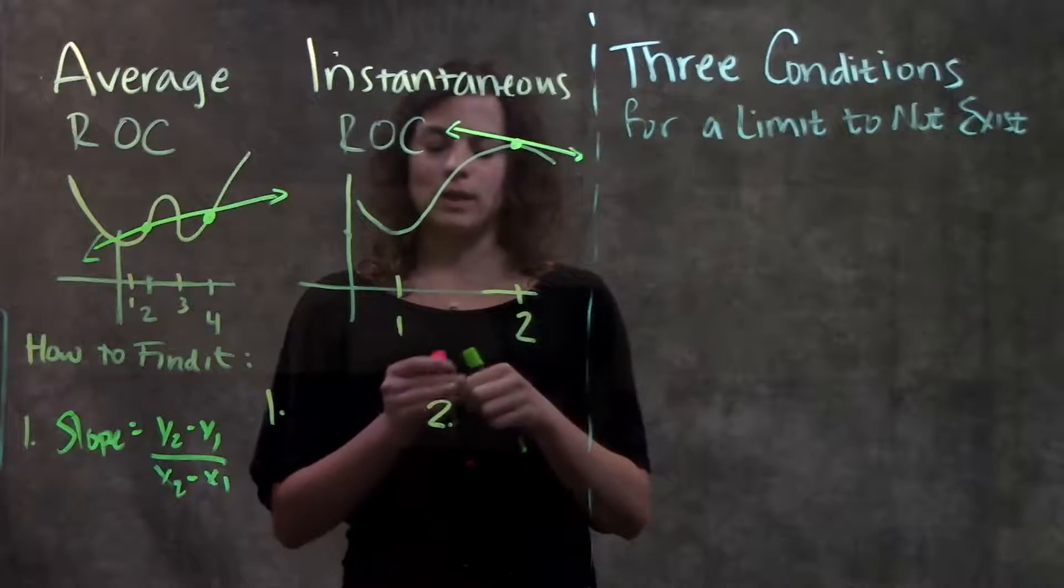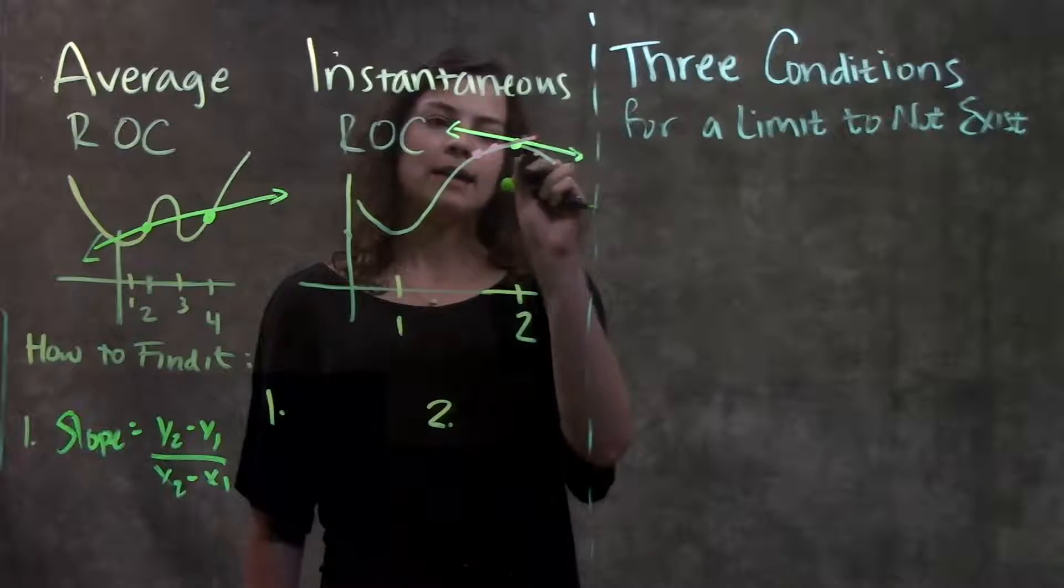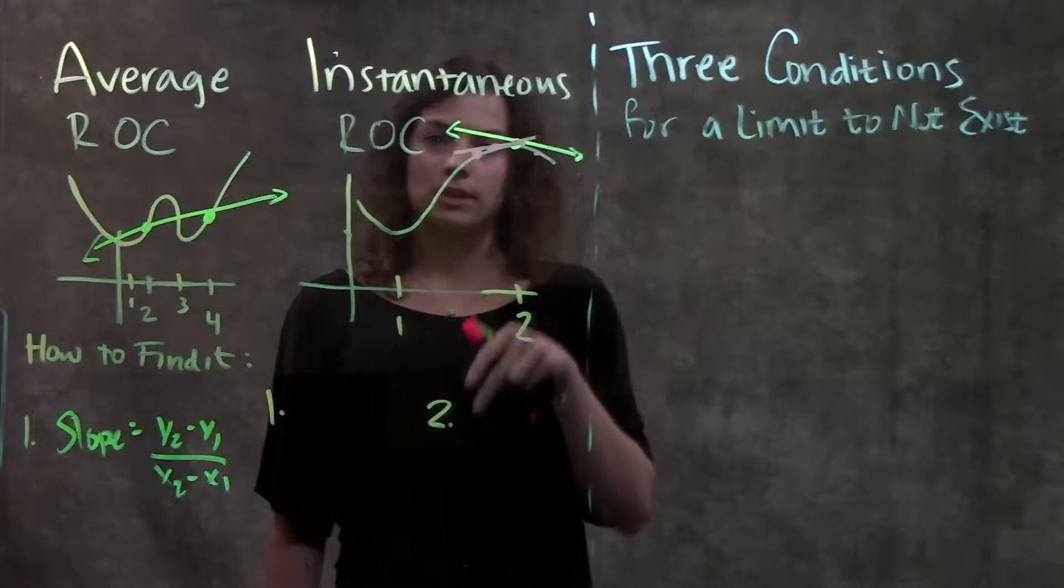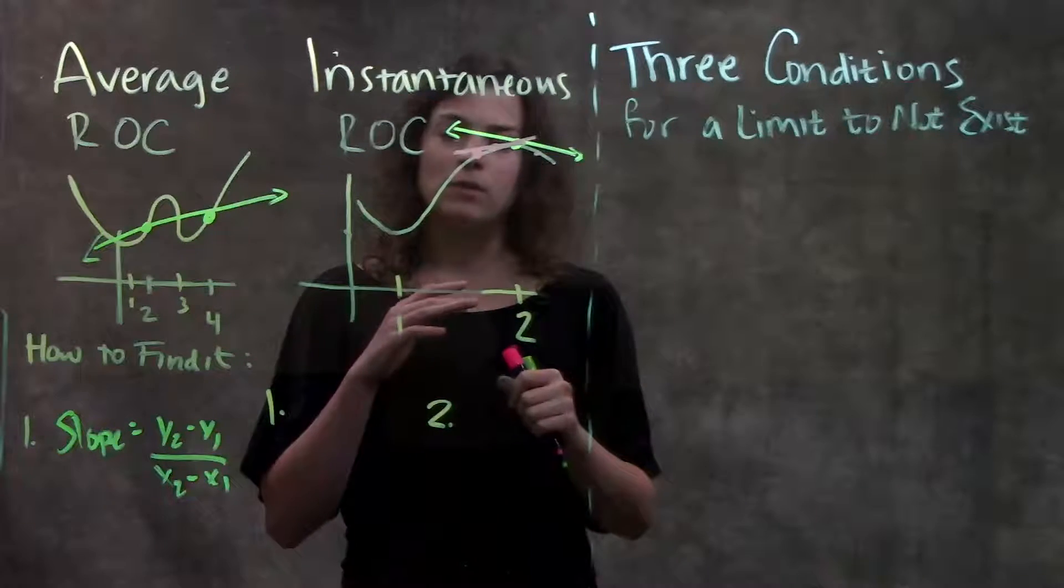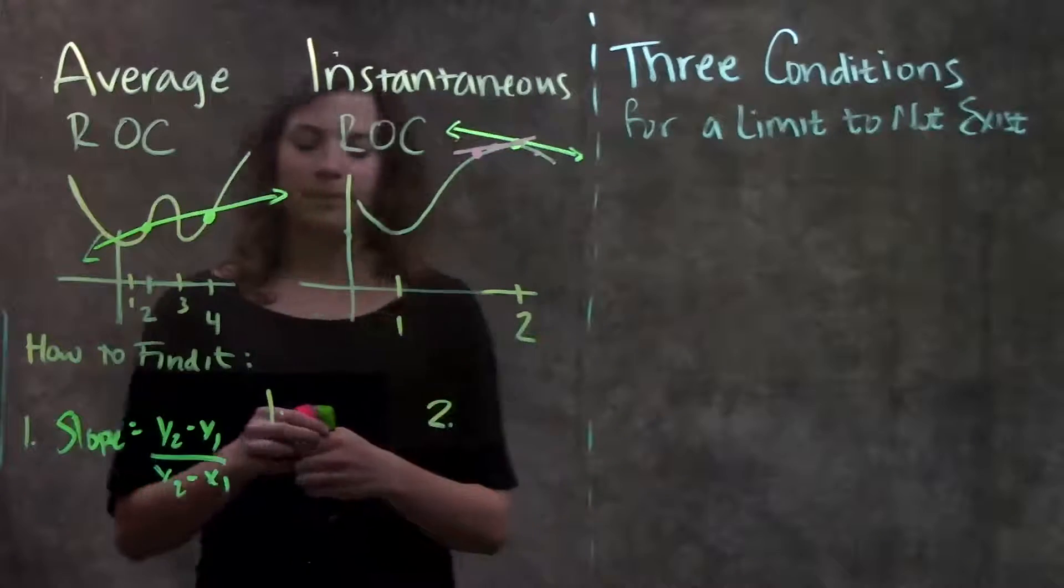Since we can't calculate the slope of this line directly, instead what we're going to do is get a bunch of points really close to our point of interest and calculate the slope of those points with our point of interest and see what those slopes are equal to in order to estimate what this slope is that we're actually interested in.